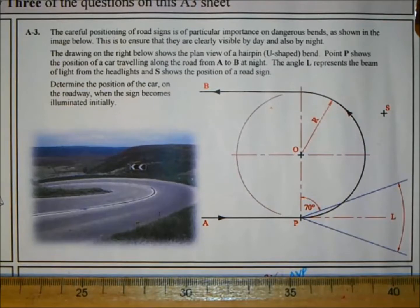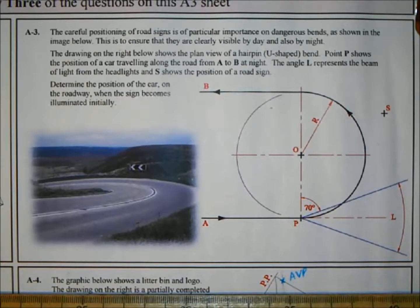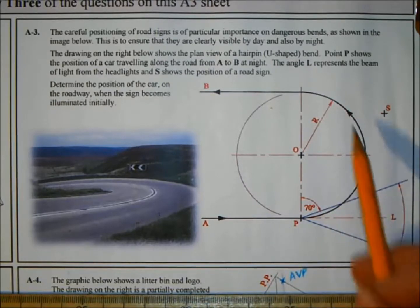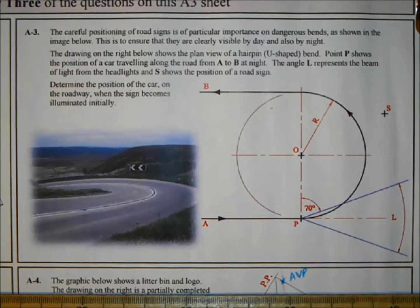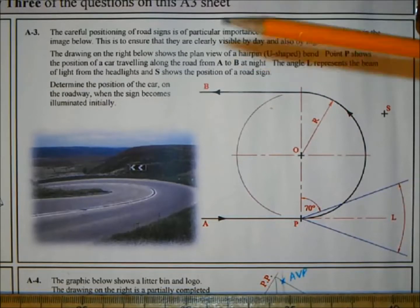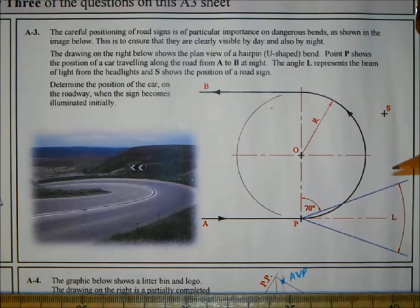This is to ensure that they are clearly visible by day and also by night. The drawing on the right below shows the plan view of a hairpin U-shaped bend. Point P shows the position of the car traveling along the road from A to B at night. The angle L represents the beam of light from the headlights and S shows the position of the road sign. Determine the position of the car on the roadway when the sign becomes illuminated initially.